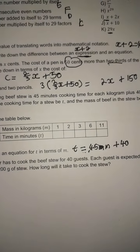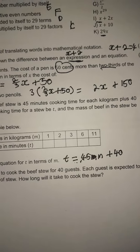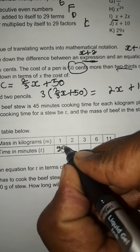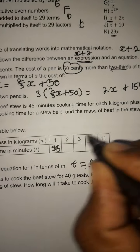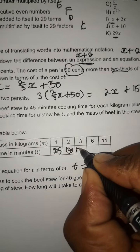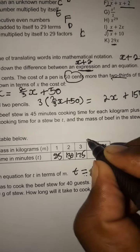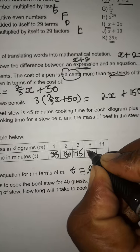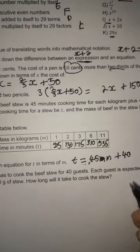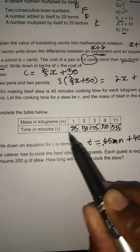Once we have this equation t = 45m + 40, we can fill in the table. For m = 1: 45(1) + 40 = 85... wait, let's recalculate — we get 85. Then plugging in further values: we are getting 130, then 175, then for m = 6 we get 310, and for m = 11 we get 510.